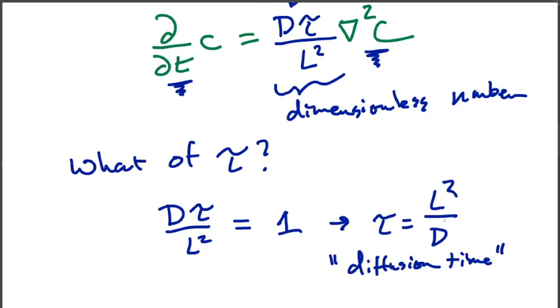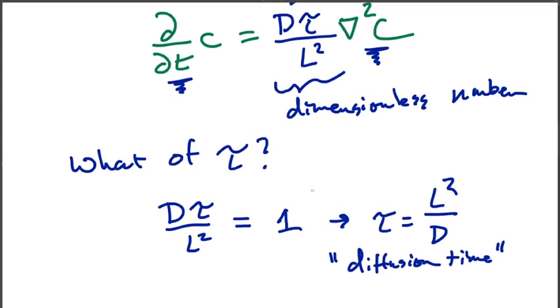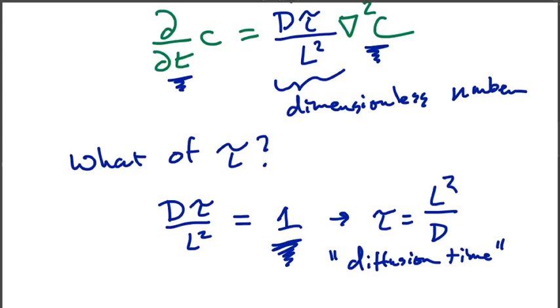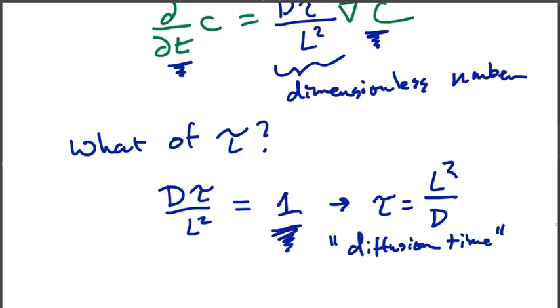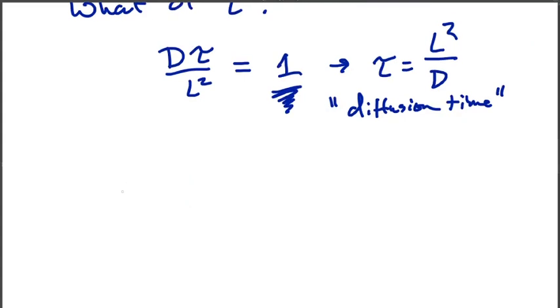All right. Armed with this choice here that Dτ/L² is equal to one, then we can write our non-dimensional system down. Our non-dimensional system is that ∂C/∂t = ∇²C.